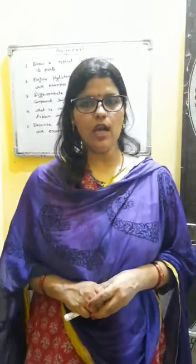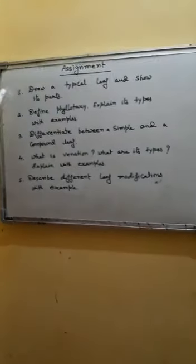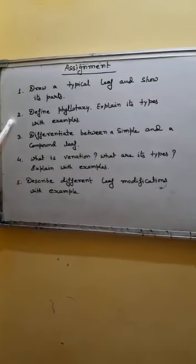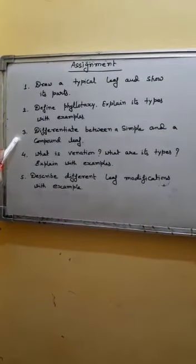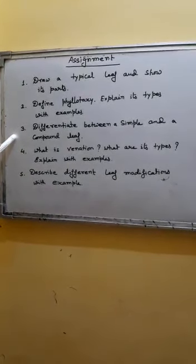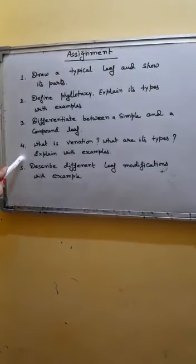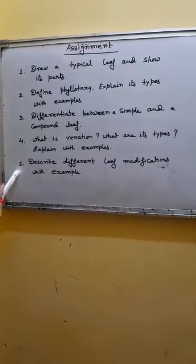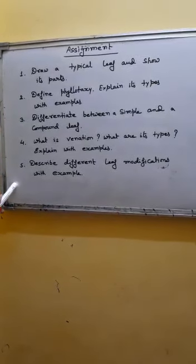Now students, this is your assignment time. Some questions are given — write down the answers. You will get all the answers in the video itself, so watch the video carefully and then try to write down the answers. First question: draw a typical leaf and show its parts. Second: define phyllotaxy and explain its types with examples. Third: differentiate between a simple and a compound leaf. Fourth: what is venation and what are its types? Explain with examples. Fifth: describe different leaf modifications with examples. The questions are very easy and need not any explanation. Write down the answers. Thank you.